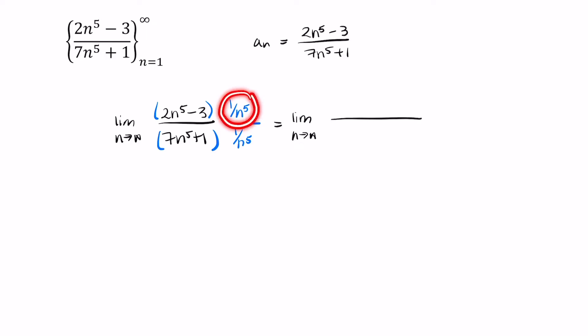Well 1 divided by n to the fifth times 2 times n to the fifth, that's just equal to 2. And then here we're going to multiply again this unit fraction by negative 3, and that gives us negative 3 over n to the fifth.